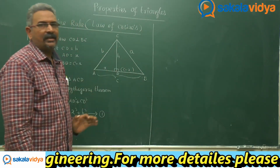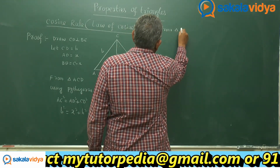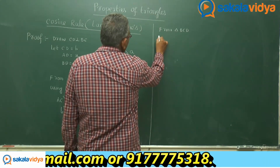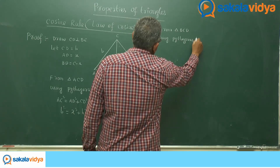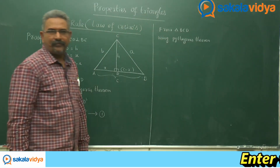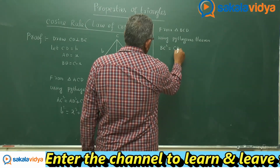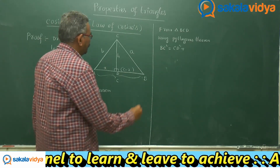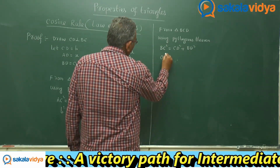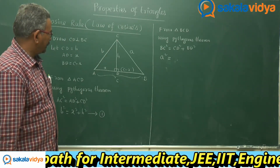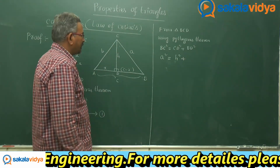Similarly, consider triangle BCD and apply the Pythagorean theorem. BC² = CD² + BD². Here BC is small a, CD is h, and BD is c minus x. So a² = h² + (c − x)².